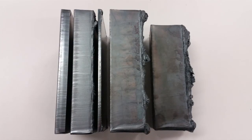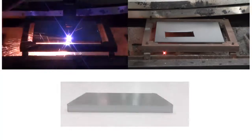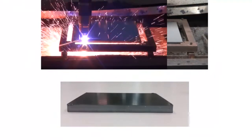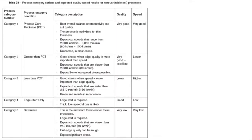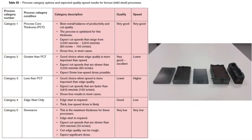The results you want from a cutting process can influence process selection. In some cases, cut quality is important. In other cases, speed is important. Often, the best choice balances the requirements. To aid in process selection, the XPR cut charts utilize a cut category value to help you choose the process that matches your needs for cut quality and speed based on material type and thickness.